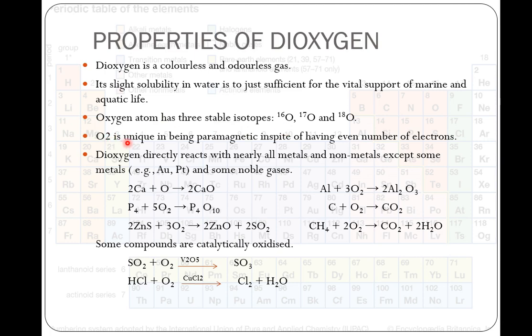O2 is very unique. It is paramagnetic in spite of having even number of electrons. The paramagnetic nature of O2 can be well understood by molecular orbital theory. It has unpaired electrons in antibonding pi orbitals.